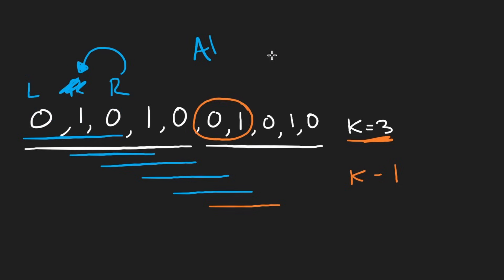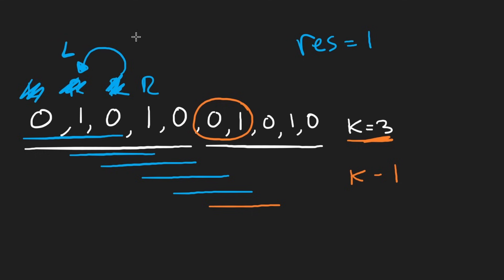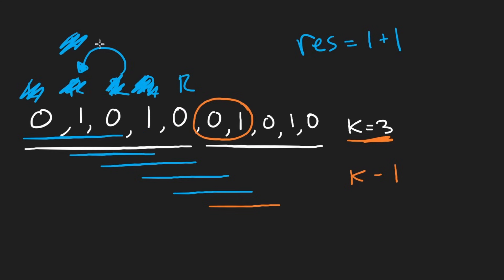So we set result to 1 after finding the first valid window. Then we shift the right pointer again — the window is now too big, so we shift the left pointer by one, bringing the window back to exactly size K. It's still alternating, so we increment the result to 2. We keep going: shift right, shift left, increment — result becomes 3.